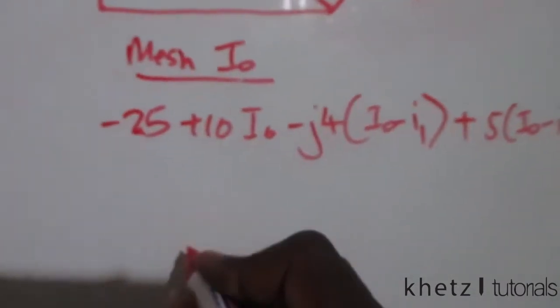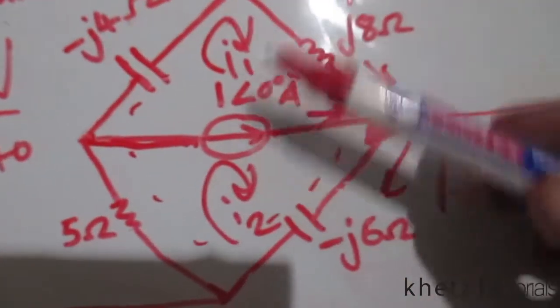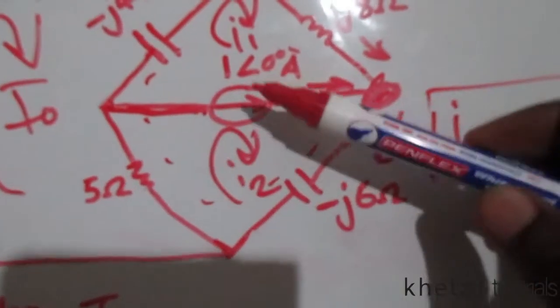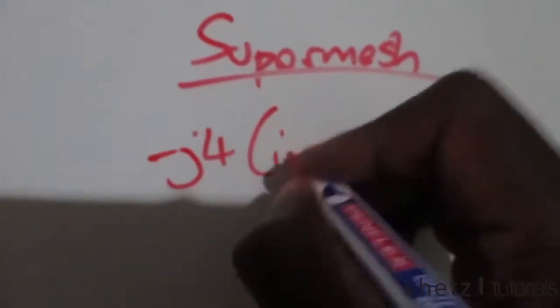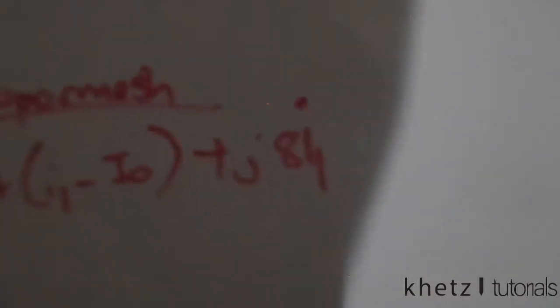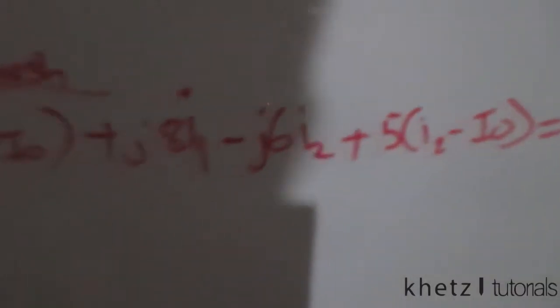Now we move to the supermesh. Instead of treating the two meshes separately, we combine their equations. Starting with the top mesh: negative j4·(I1 − IO), then j8·I1 (not shared), then proceeding to the second mesh: negative j6·I2 (not shared), and finally 5·(I2 − IO) which is shared with the IO mesh. That gives us our third equation. We now have three equations and three unknowns.